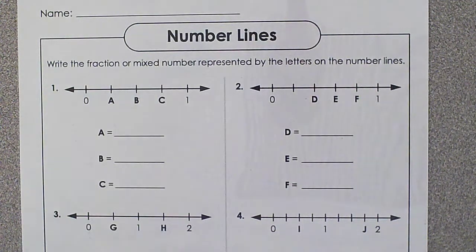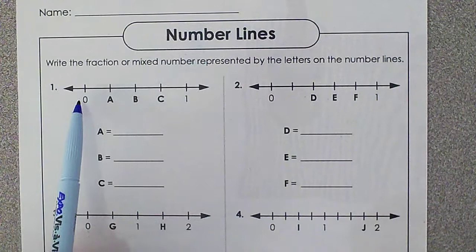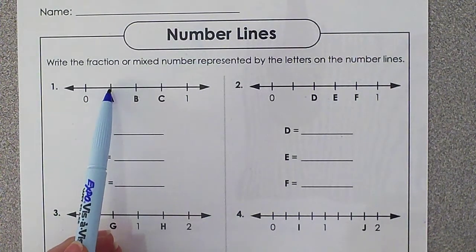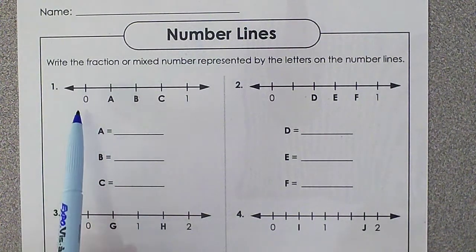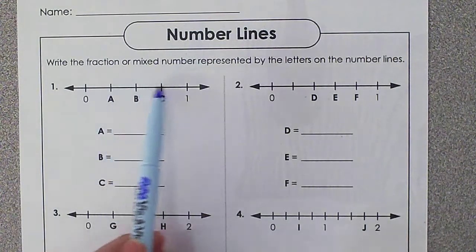Today we're going to talk about fraction number lines. When you're doing a fraction number line, you have to have a numerator and a denominator. You get your numerator by counting over to the point. You get your denominator by counting to the 1.